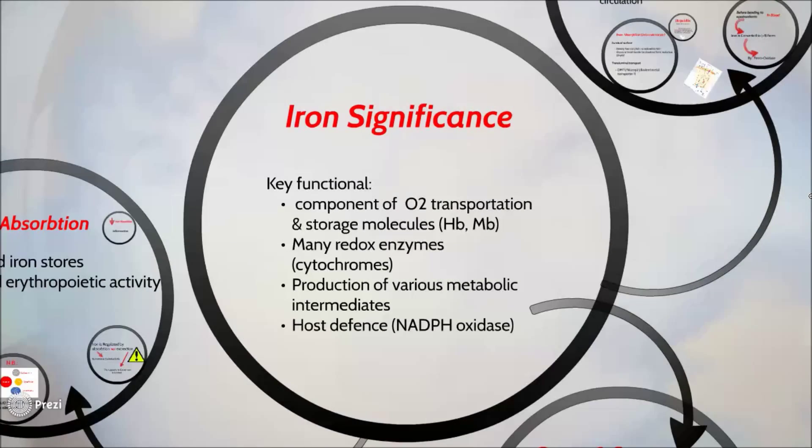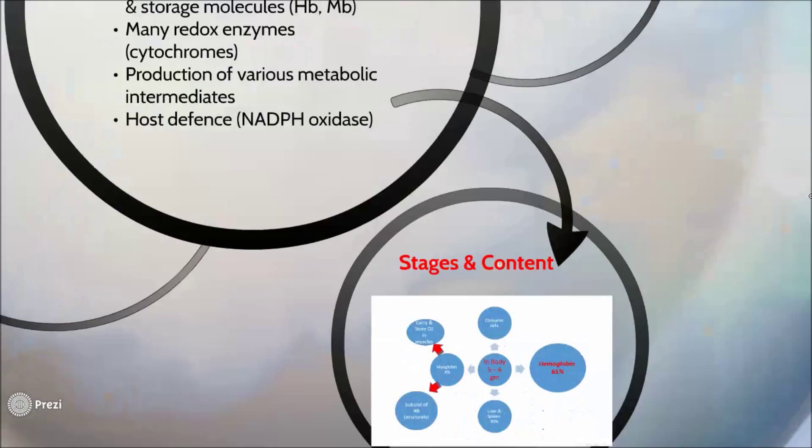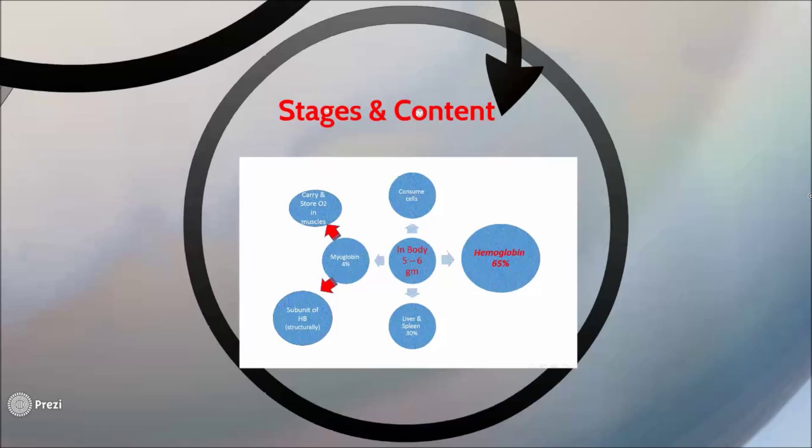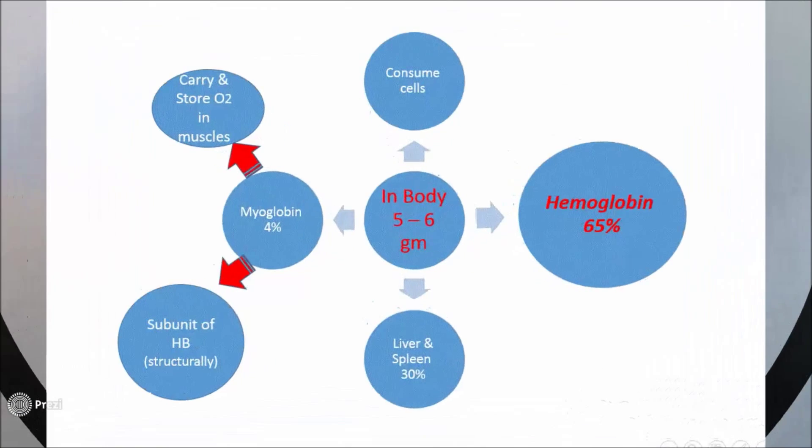First, let's talk about iron importance in the body. Iron is an essential component of oxygen transportation and storage, as it enters in the synthesis of hemoglobin and many redox enzymes. It also enters in production of various metabolic intermediates and acts as a host defense.